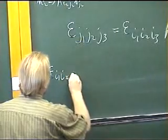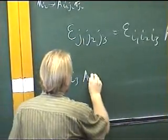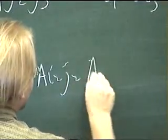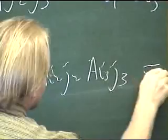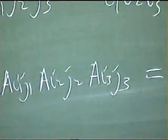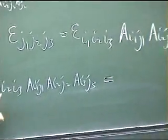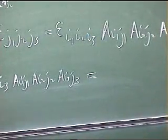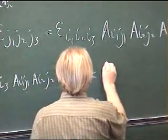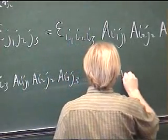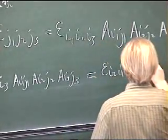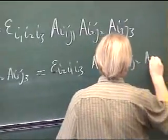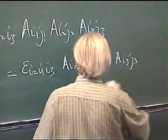So if I take epsilon i1, i2, i3, ai1 j1, ai2 j2, ai3 j3, this is equal to—first thing I'm going to do is call i2, i1 and call i1, i2. I can just relabel dummy indices. So this will now be epsilon i2, i1, i3, ai2 j1, ai1 j2, ai3 j3.